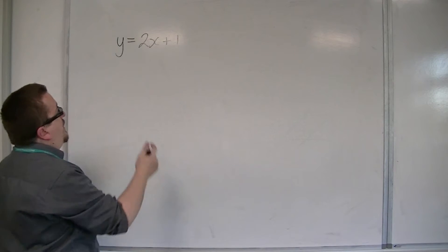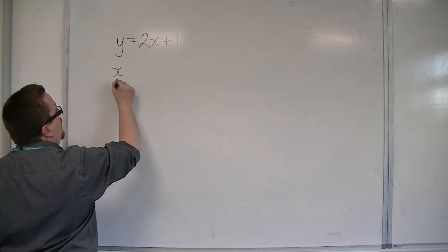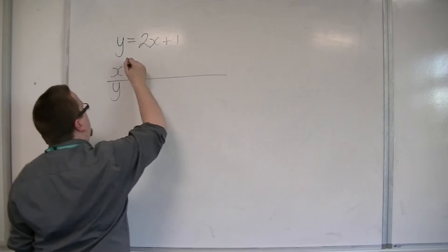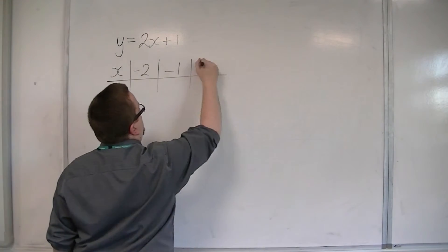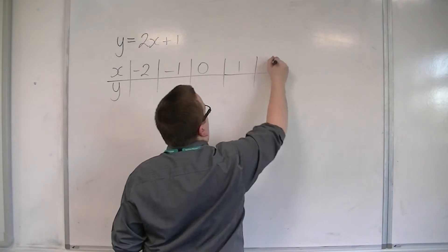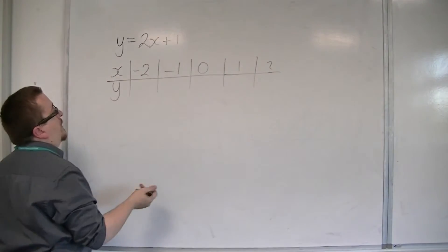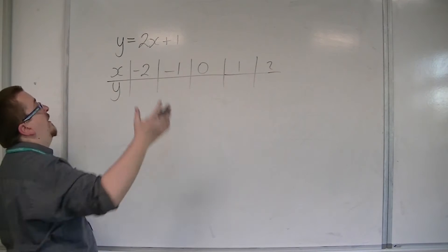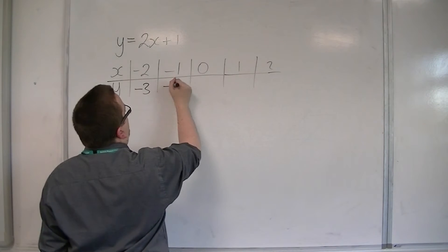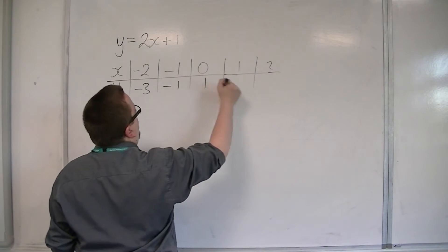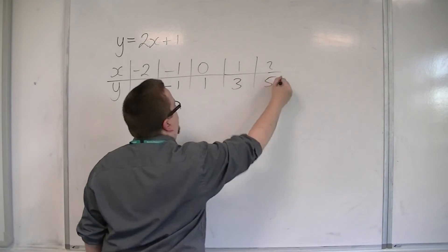then you might remember that you would have to build up a table of values of x's and y's. So you might start at minus 2, then minus 1, 0, 1, 2, etc. And then plug those values of x into the equation. So you'd have minus 3, you'd have minus 1, then you'd have 1, then 3, then 5.